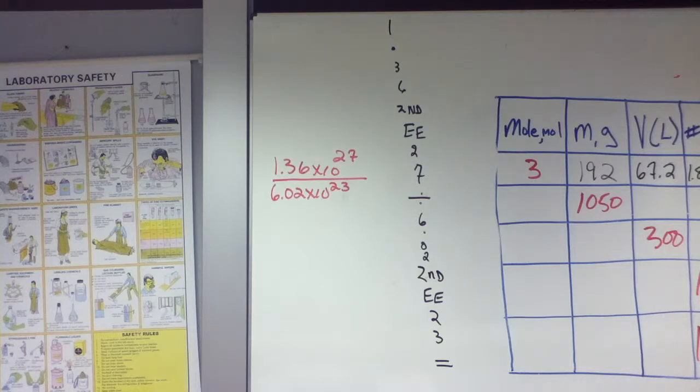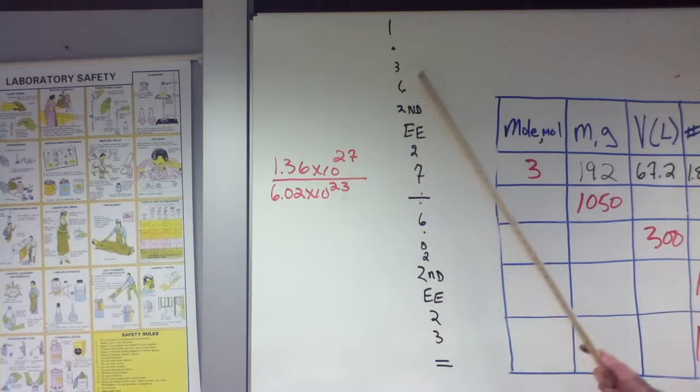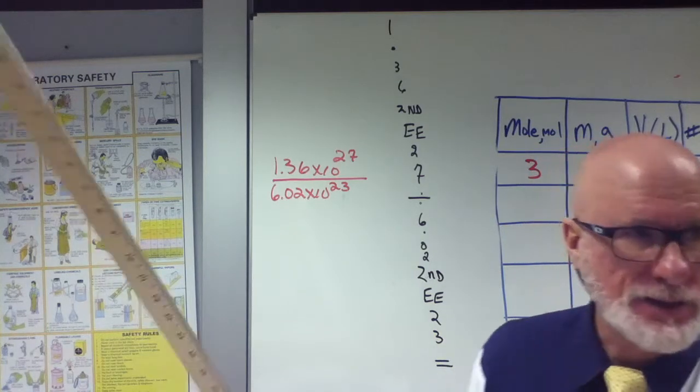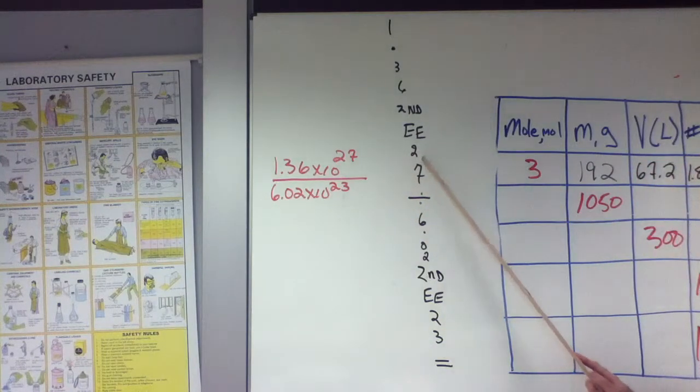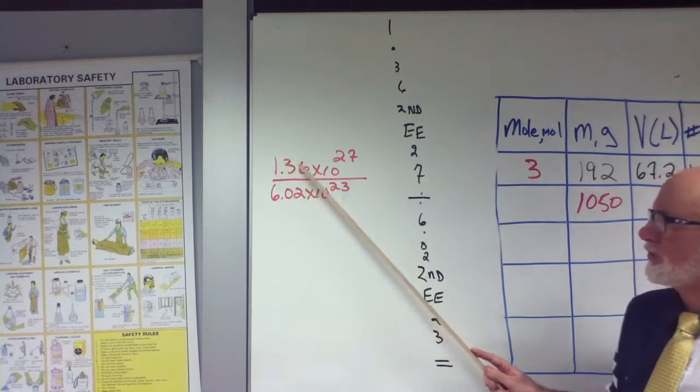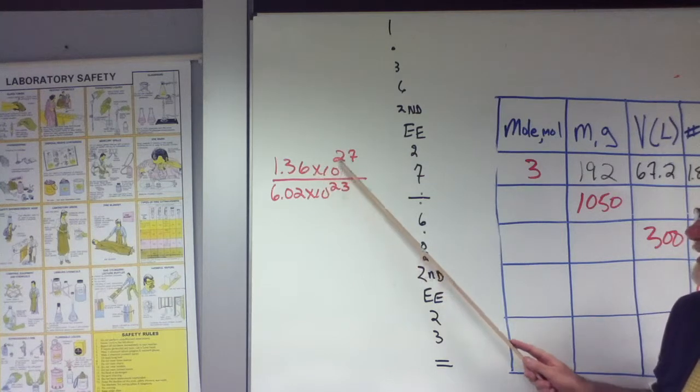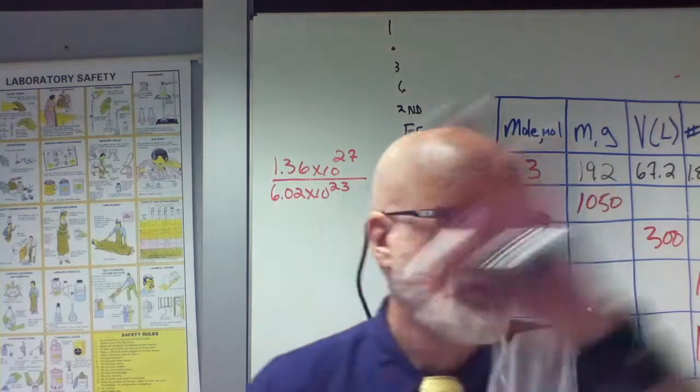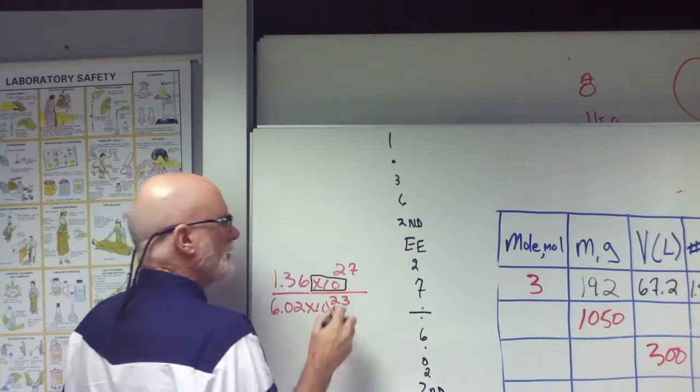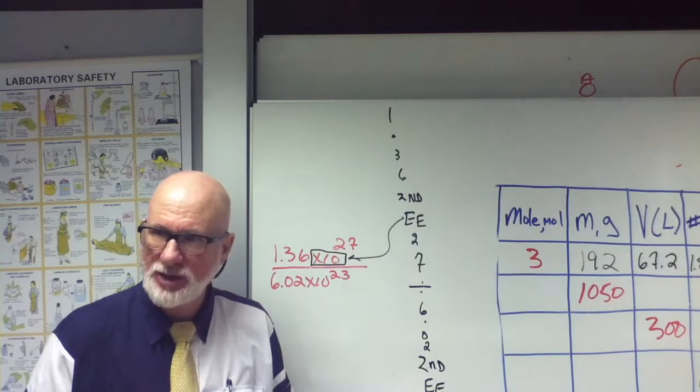So you're going to press these buttons: 1.36 second EE. The reason you're doing the second is because it's going to be above a button. So it's 1.36 times 10 to the 27, so you can put 1.36 EE or second EE, which is this. The whole thing. You don't have to say times. By saying EE, that's this. See that? That's the EE. You don't have to put any of that in. Has that been confusing people?